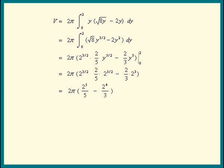2 to the 4th factors out. We get 2 to the 5th π outside times 2/5 minus 1/3. The common denominator of 5 and 3 is 15. We get 6 minus 5 over 15.